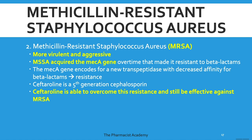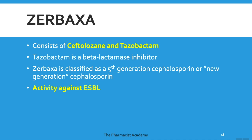Ceftaroline is a fifth-generation cephalosporin that is able to overcome this resistance and still be effective against MRSA — it is the only cephalosporin that works against MRSA infections. We also have Zerbaxa, which consists of ceftolozane and tazobactam, a beta-lactamase inhibitor. Some classify Zerbaxa as a fifth-generation cephalosporin and others call it a new-generation cephalosporin. It has great activity against ESBL, and that's why we love it.